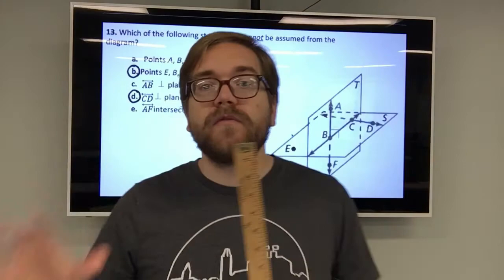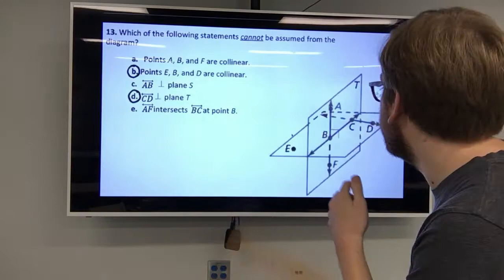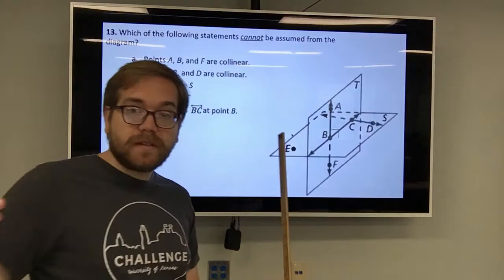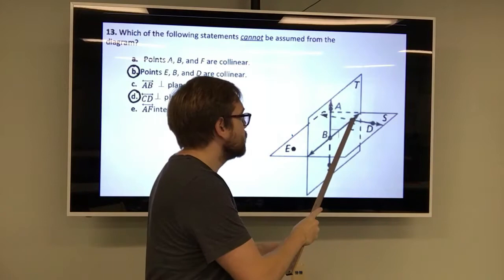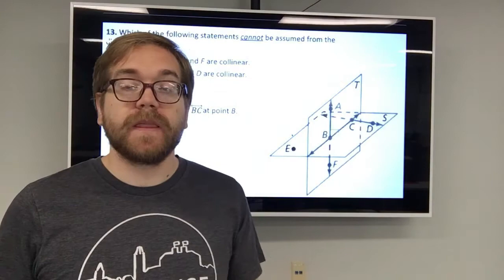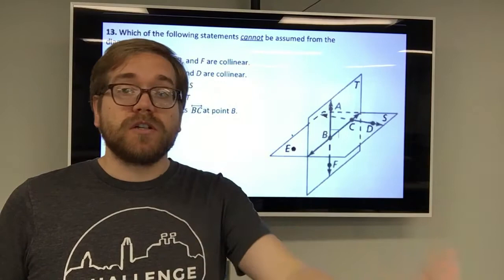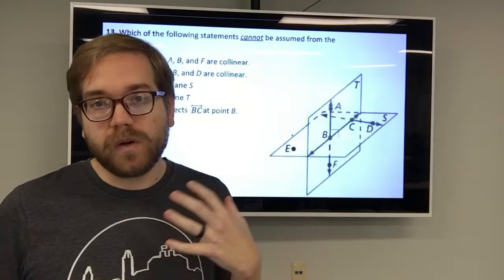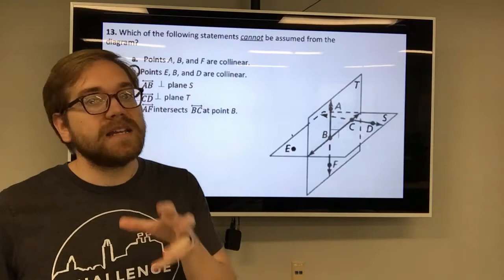Statement D asks if line CD is perpendicular to plane T. Line CD is here and plane T is the vertical one. We see the line intersecting with that plane, but what do we not see? We don't see that little right angle symbol — that little half box — where the line and the plane meet. So even if they were actually perpendicular, we can't tell that from this diagram. Just because it looks perpendicular doesn't mean it is; you have to go off what the diagram is telling you.